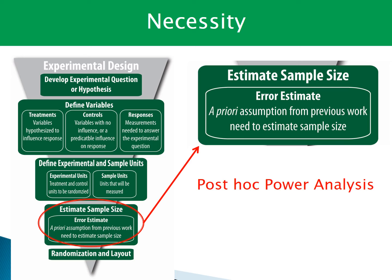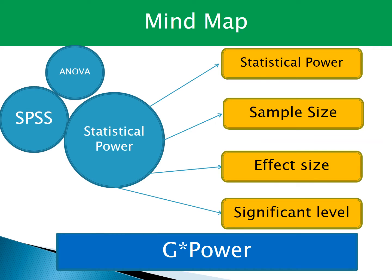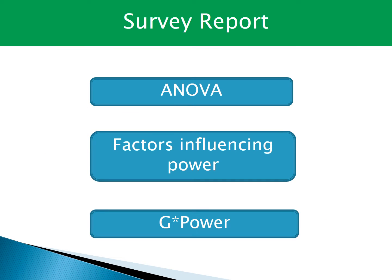You have to estimate sample size before starting the experiment. This is a mind map about statistical power. There are three factors which influence statistical power: sample size, effect size, and significant level. With these factors, we can calculate statistical power through the program named G-Power.